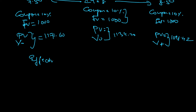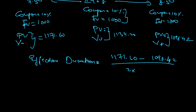Plugging into the effective duration formula: V-minus is 1171.60 minus V-plus which is 1098.42, divided by 2 times V-zero times delta YTM. The delta YTM is 0.50 (50 basis points expressed as a decimal). Computing this gives approximately 0.0645.